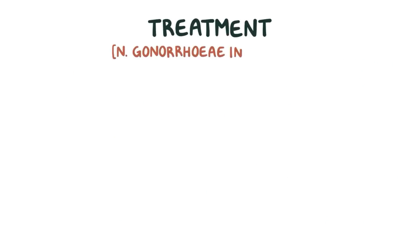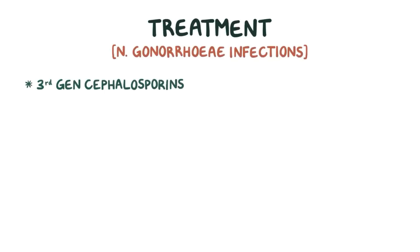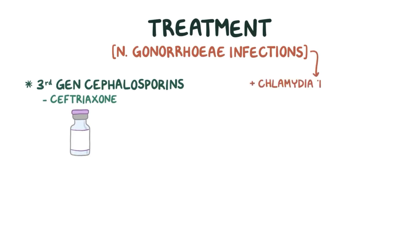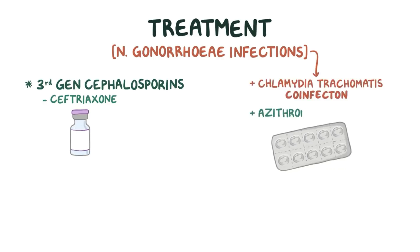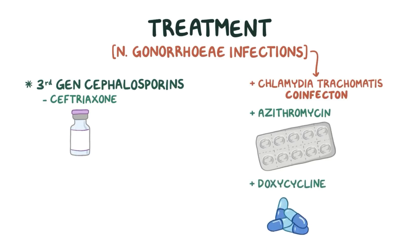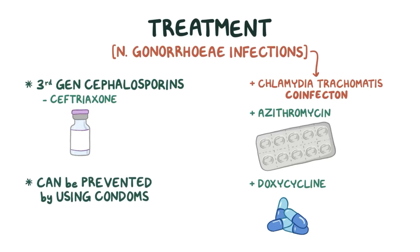Treatment for N. gonorrhoeae infections is with third generation cephalosporins, typically ceftriaxone. However, it has been found that gonococcal infections are frequently associated with a Chlamydia trachomatis co-infection, so usually azithromycin or doxycycline are given along with ceftriaxone, to also cover chlamydia. Finally, since gonorrhea is a sexually transmitted infection, it can be prevented by using condoms during sex.